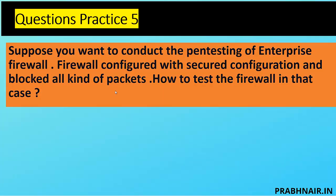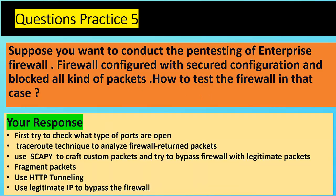Question five: suppose you want to conduct pen testing of an enterprise firewall that is configured with a secured configuration blocking all kinds of packets — how do you test the firewall? First, check what ports are open on the firewall using traceroute technique and Nmap to analyze return packets and identify open ports. If that is not possible, use Scapy — a tool for creating custom packets — to try to bypass the firewall by dividing signatures into fragmented small packets.